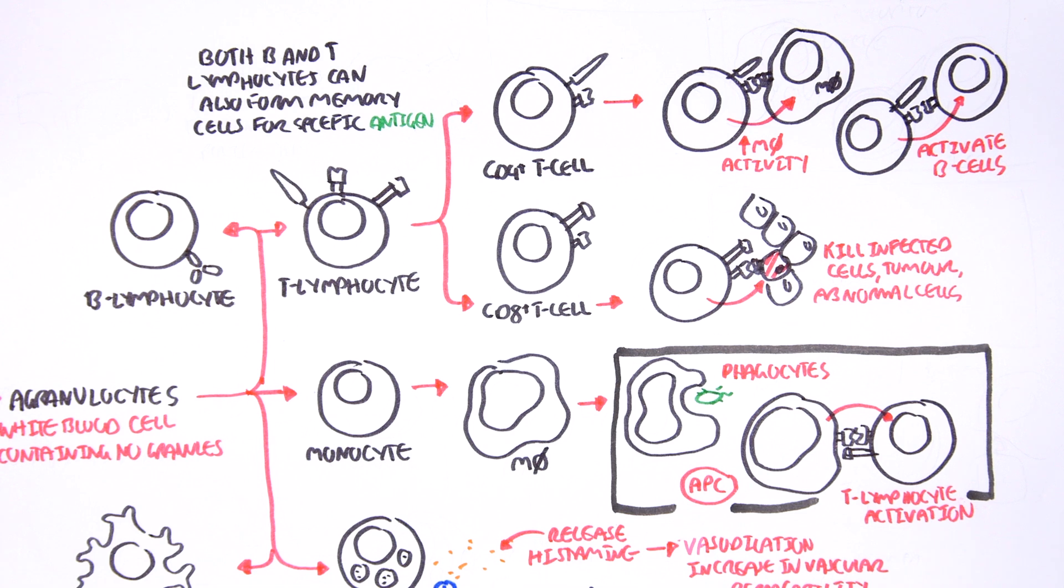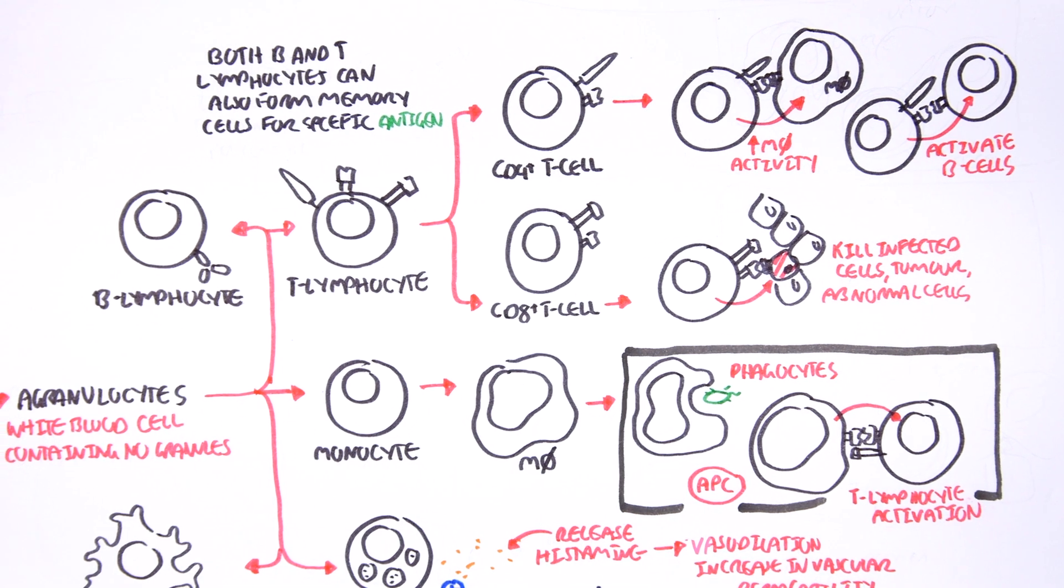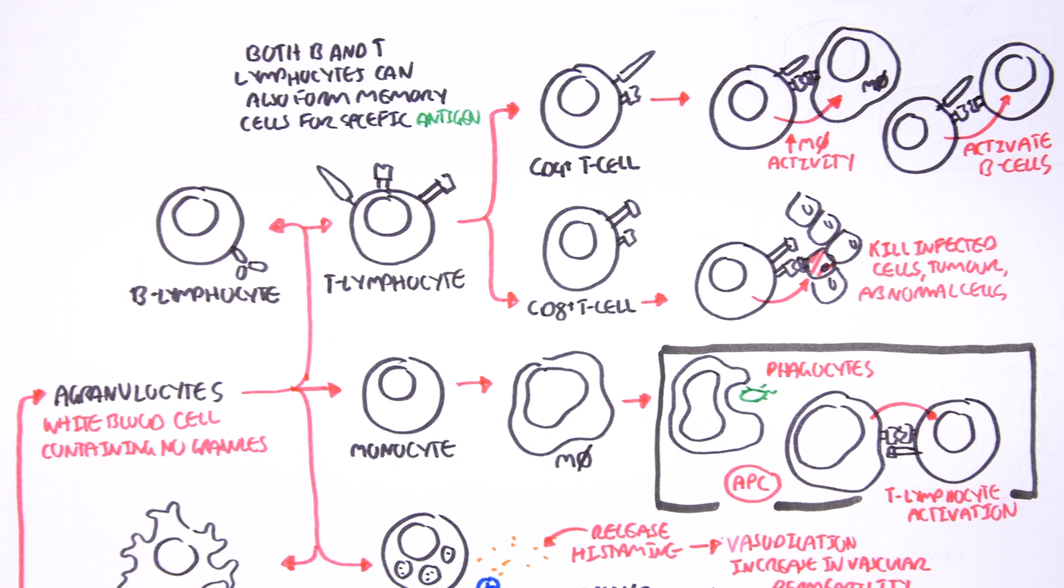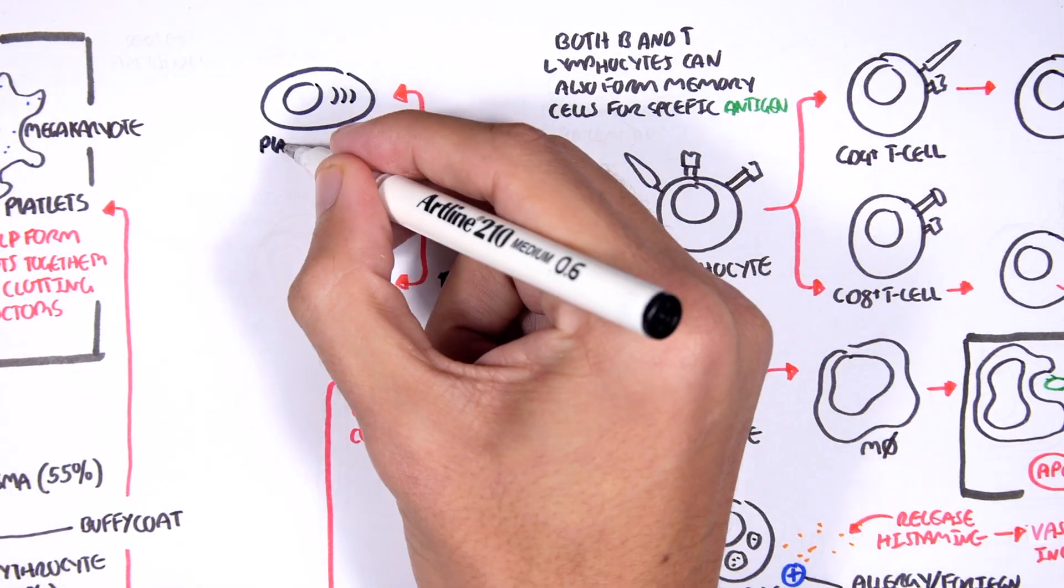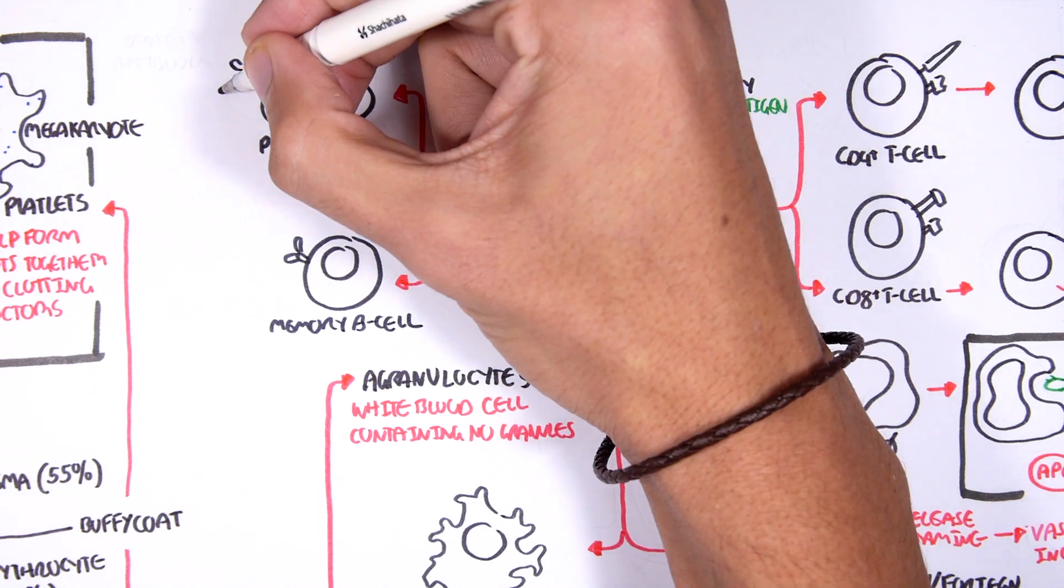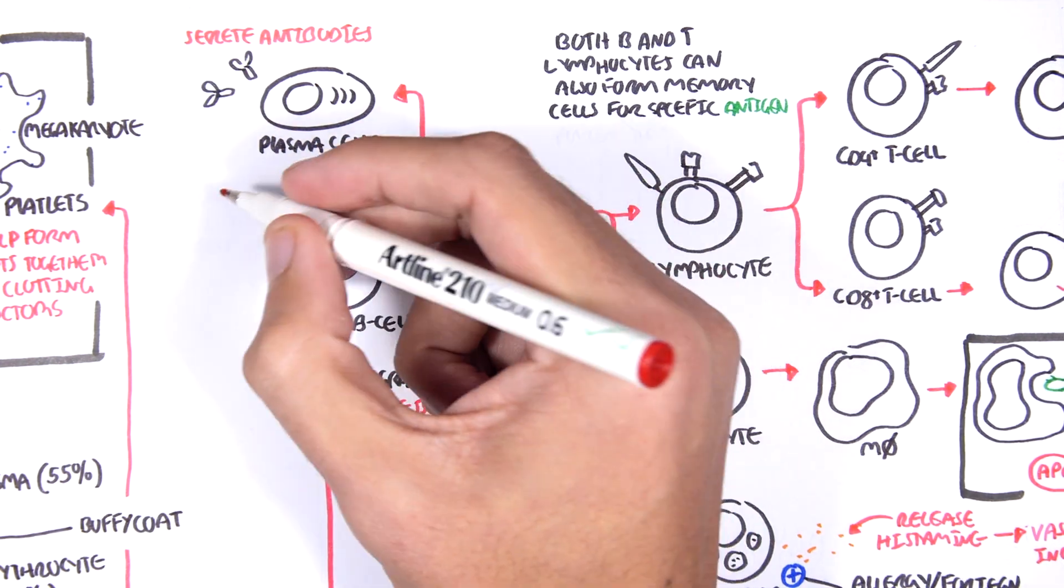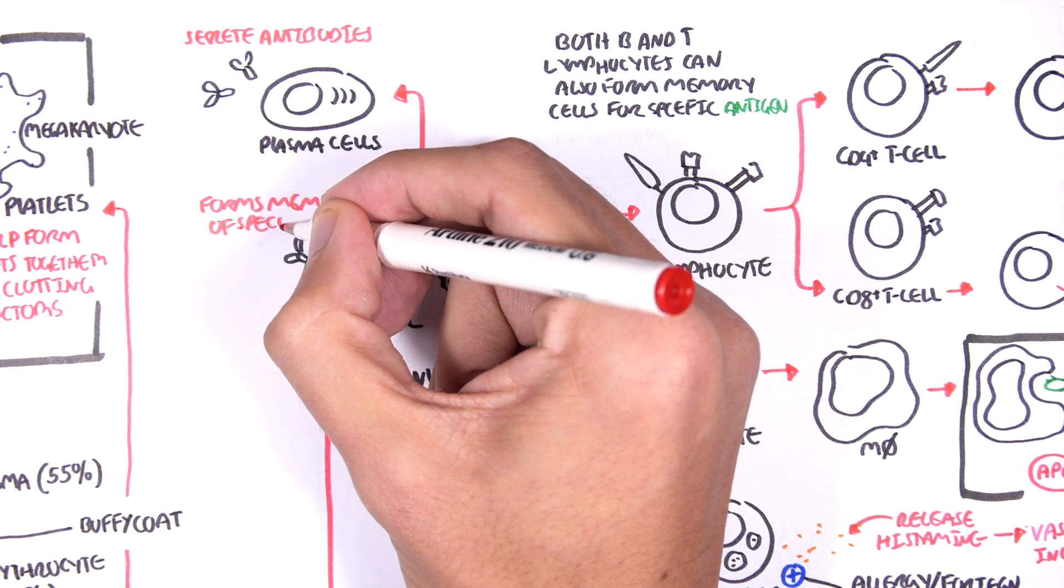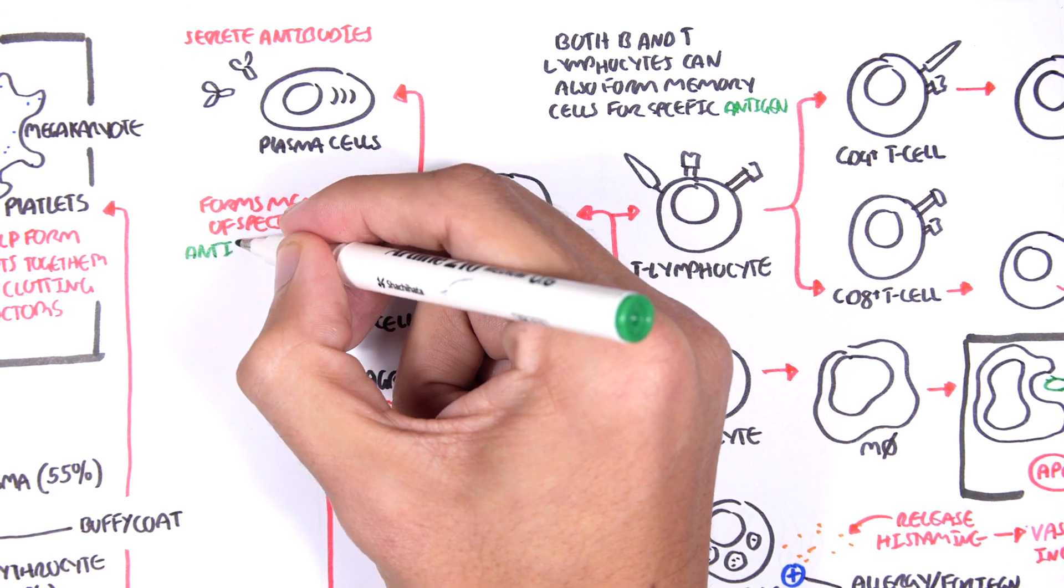Then you have the B lymphocytes. The B lymphocytes, or known as the B cells, they can be divided into plasma cells or they can be memory B cells once they are activated. Plasma cells essentially secrete antibodies that help combat allergens or pathogens. Then you have the memory B cells that are cells that form a specific memory to a particular antigen or agent.